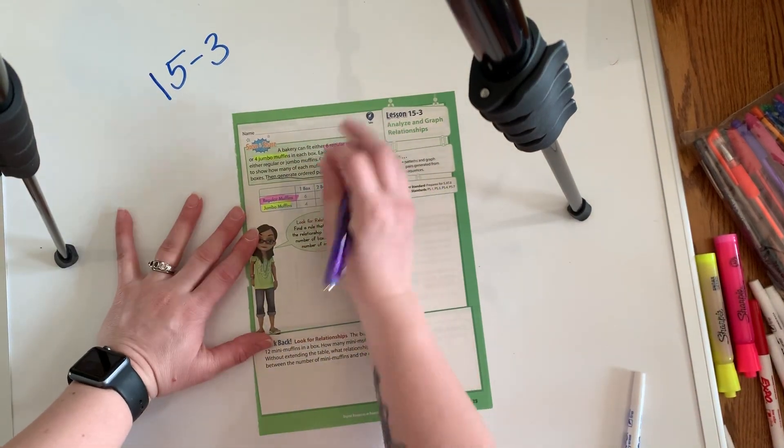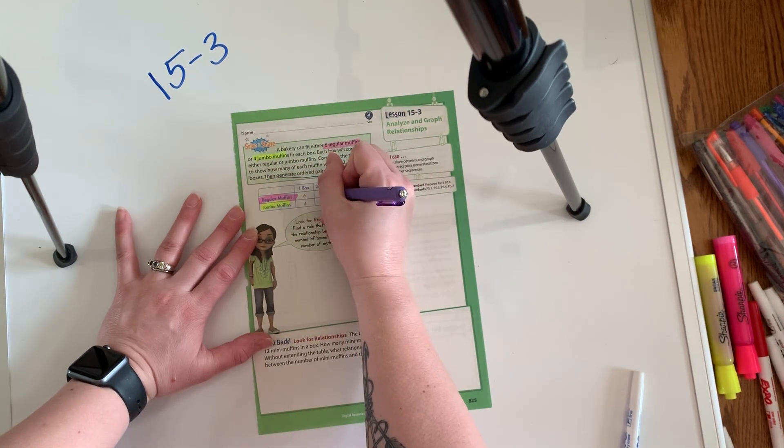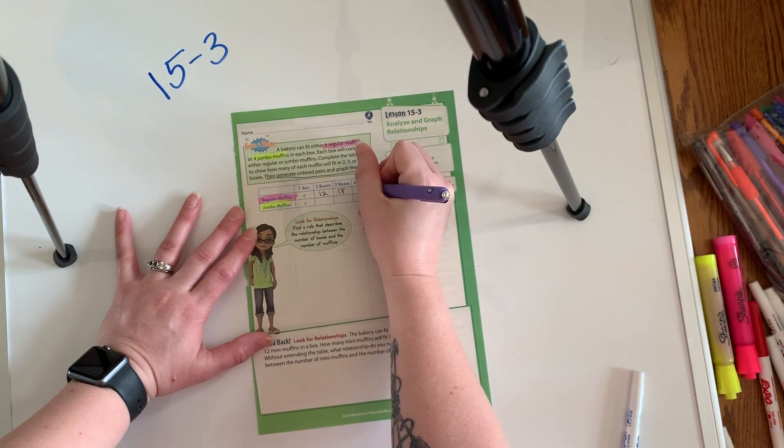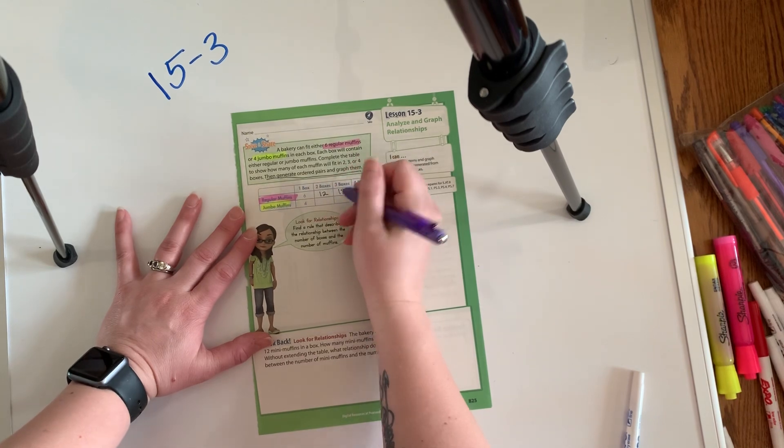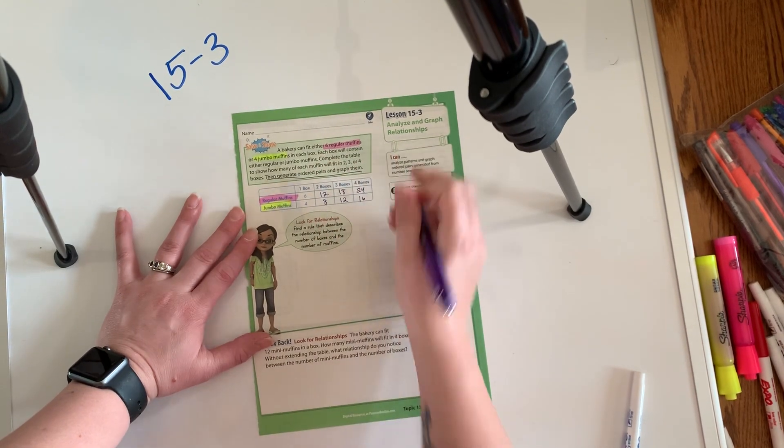All right. So what we're going to do here, six boxes, six in the first box, that would be 12 in two boxes, 18 in three boxes, or 24 in four boxes. And then four, eight, 12 and 16.